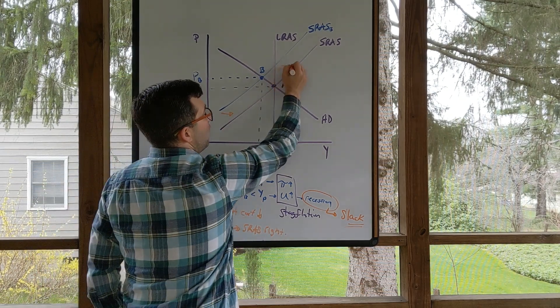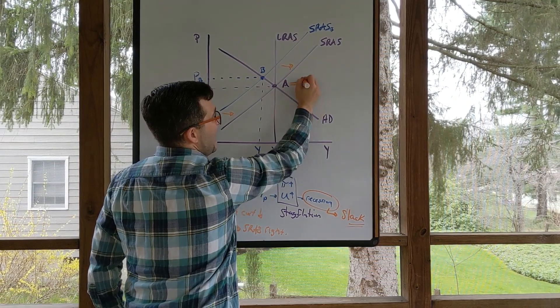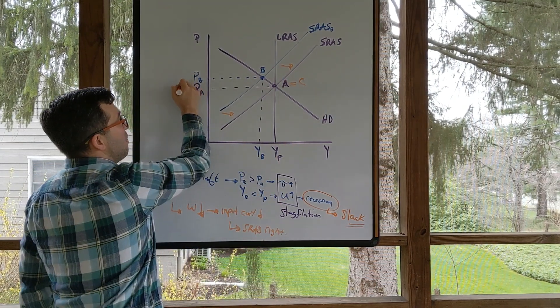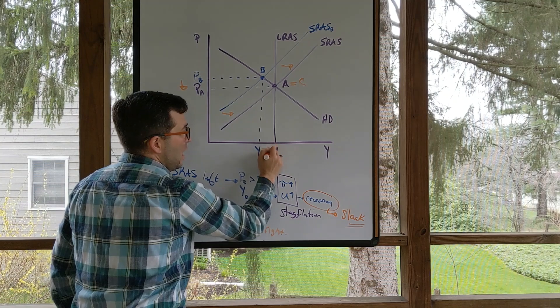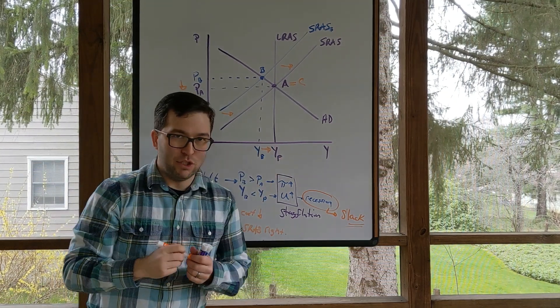It's going to move back, and point A is going to be point C. Prices will come back down here, and output will go back to potential GDP.